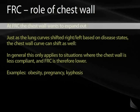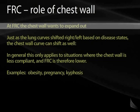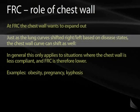Remember at FRC there's a balance: the chest wall wants to expand out and the lungs want to collapse down. Just as we can see a change in FRC because of elastic recoil properties — in emphysema where FRC is higher, in fibrosis where FRC is lower — we can also see a change in FRC as a result of a chest wall property.